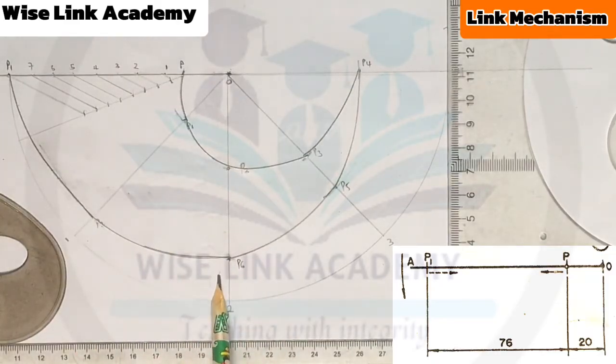So this is what will be produced if point P rotates anti-clockwise as you can see. If you found this class helpful, do not forget to click on the subscription button and like. Thank you and welcome to Wise Link Academy.